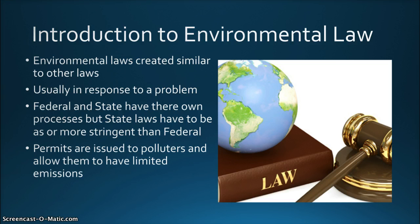Environmental requirements are often incorporated into permits. Permits are issued by the EPA or the State Environmental Agency under the authority of many of the environmental regulations, including the Clean Water Act, the Clean Air Act, and the Resource Conservation and Recovery Act. Permits are issued to a specific business or institution and essentially permit the holder to pollute within certain limits. Permits do not stop pollution, but they do help to control it.